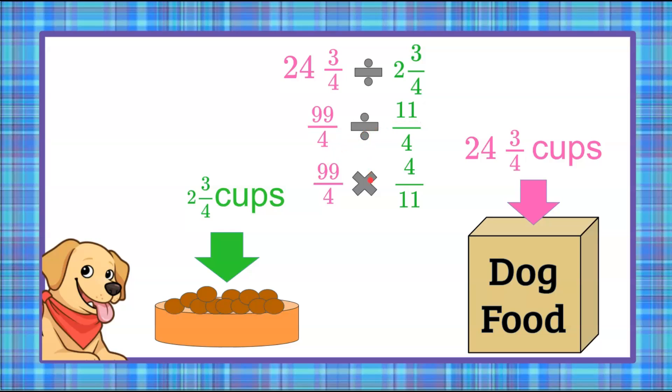Now we're going to multiply, but I can see that I can simplify here. 4 divided by 4 is going to be 1, leaving us 99 in the numerator and 11 in the denominator. 99 divided by 11 is 9. So we can say that we have 9 days of 2 and 3/4 cup portions in this bag for our dog.